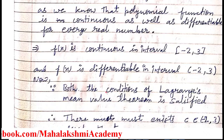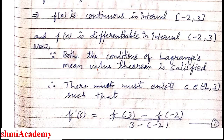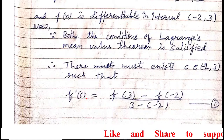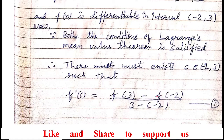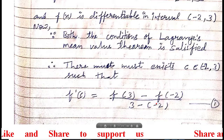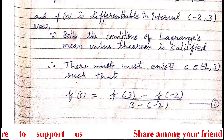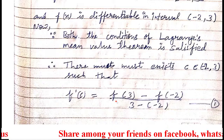Since both conditions of Lagrange's mean value theorem are satisfied, the theorem states that there must exist a point c belonging to the open interval (-2, 3) such that f'(c) = [f(b) - f(a)] / (b - a), that is, the function's value at the upper limit minus the function's value at the lower limit, divided by upper limit minus lower limit. If any function satisfies the theorem's conditions, it must also satisfy this relation.